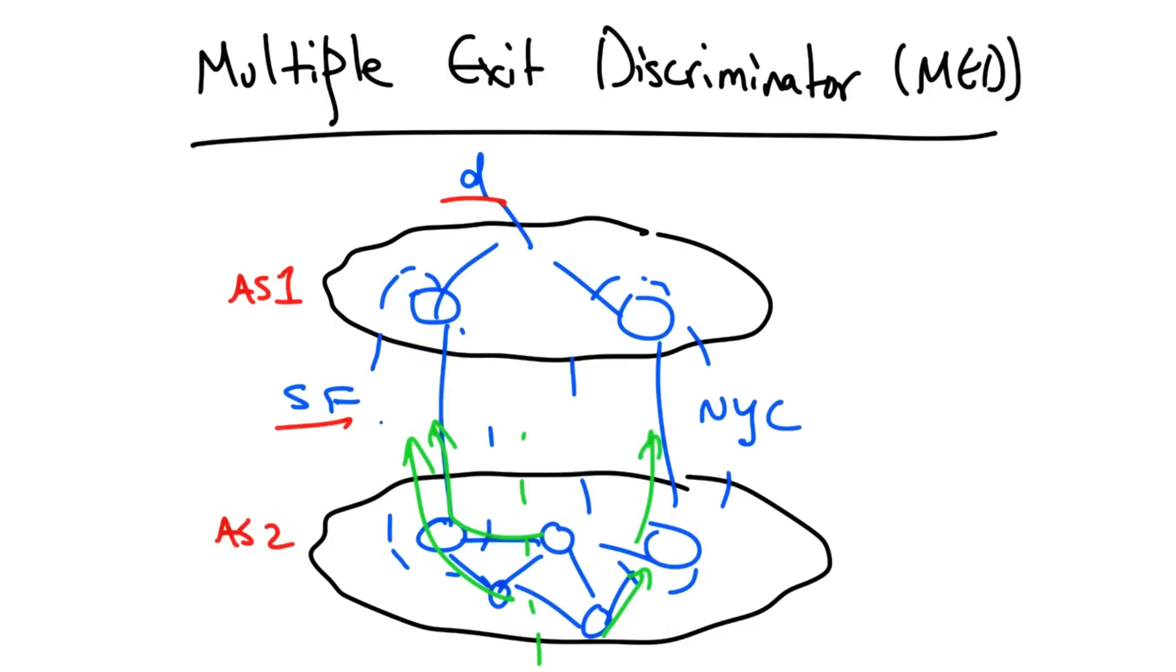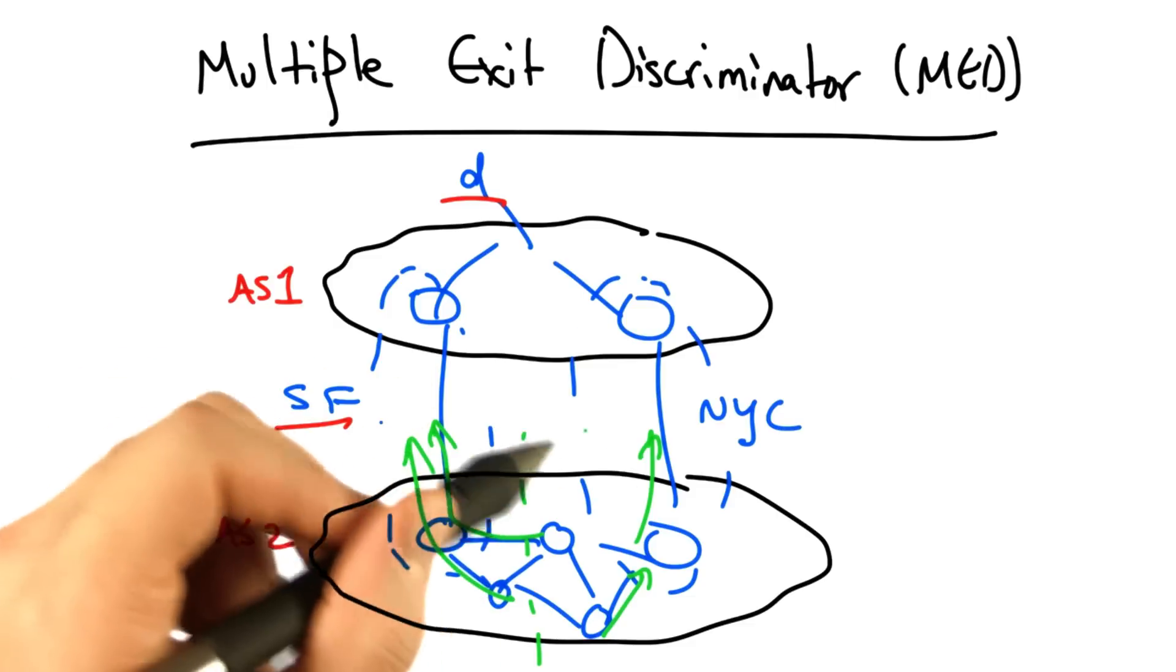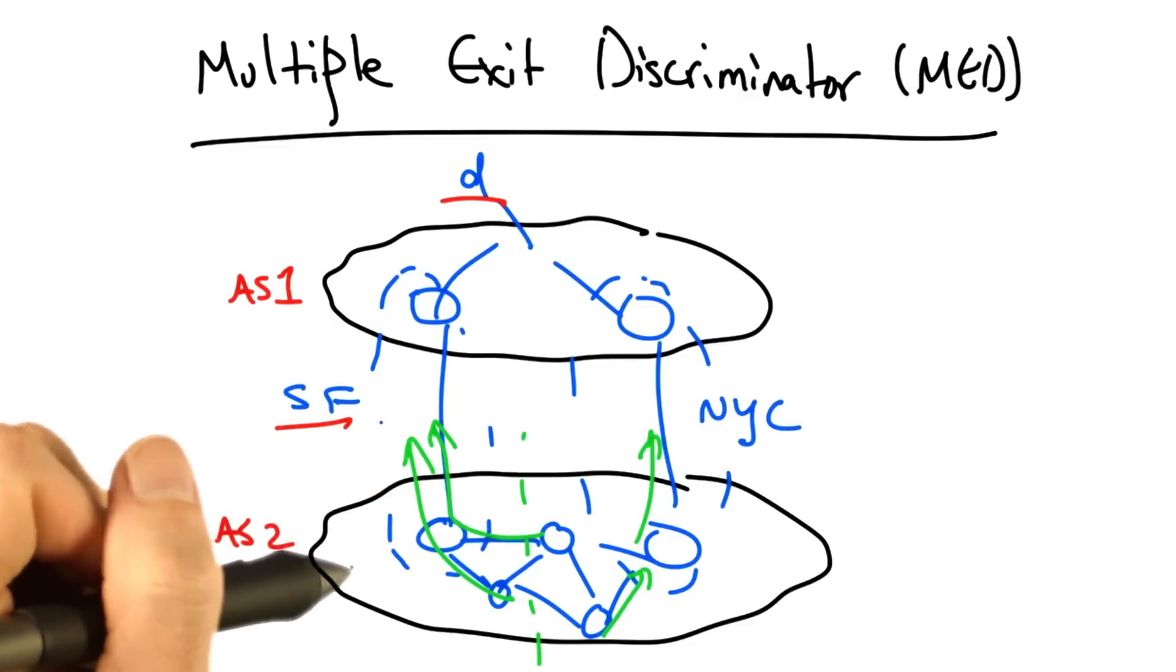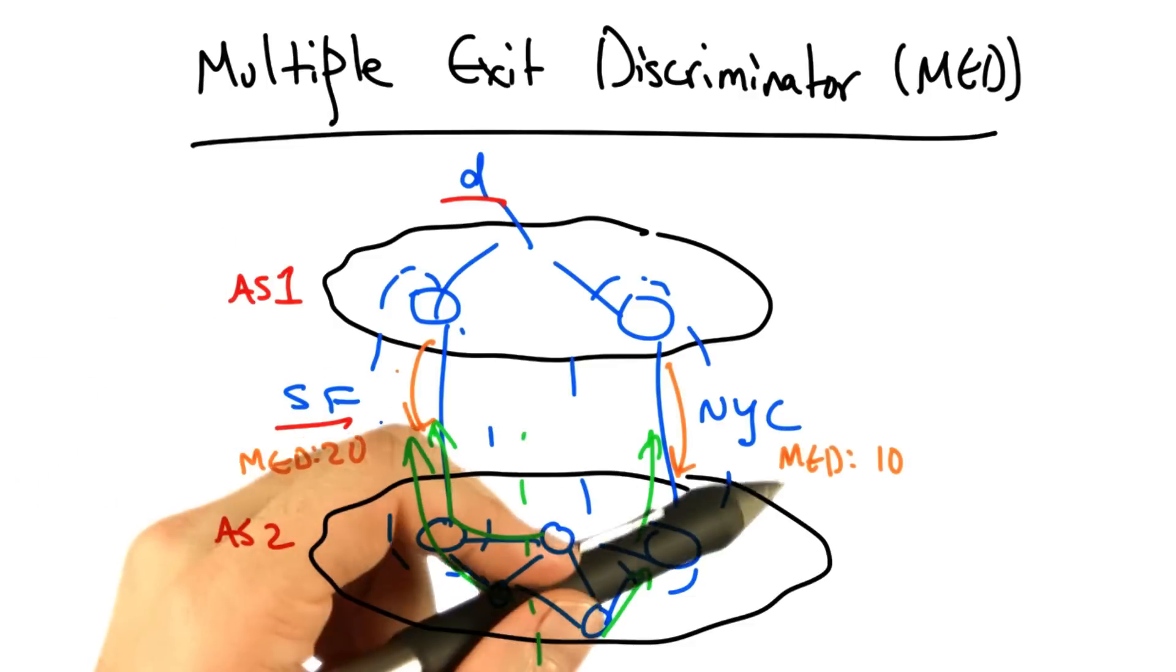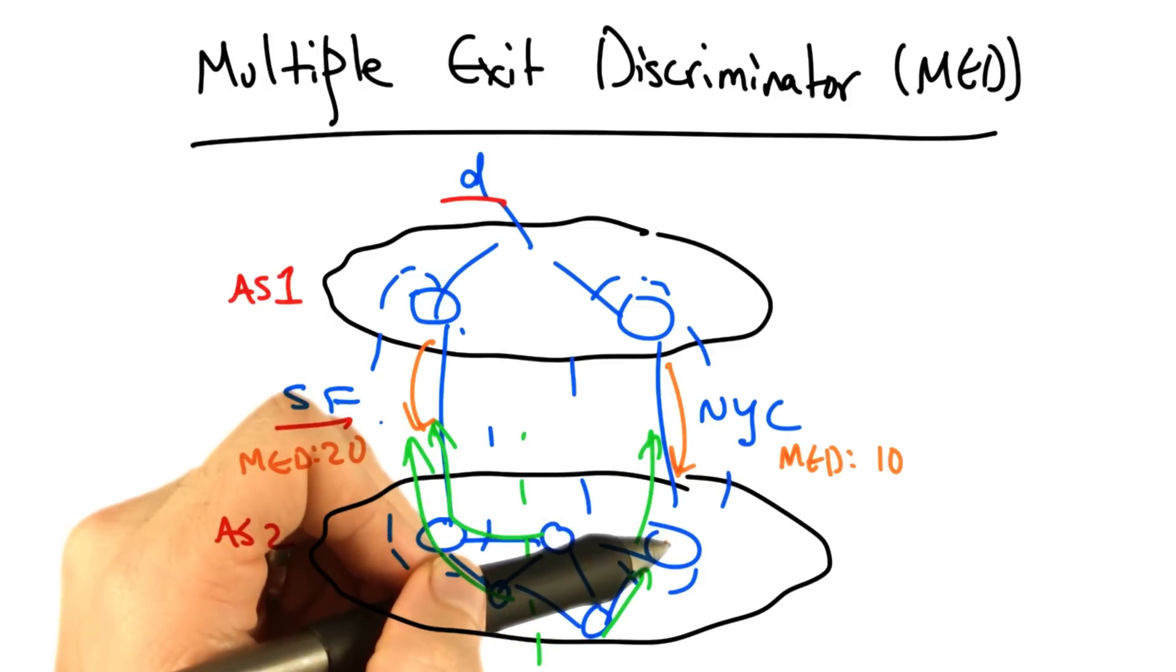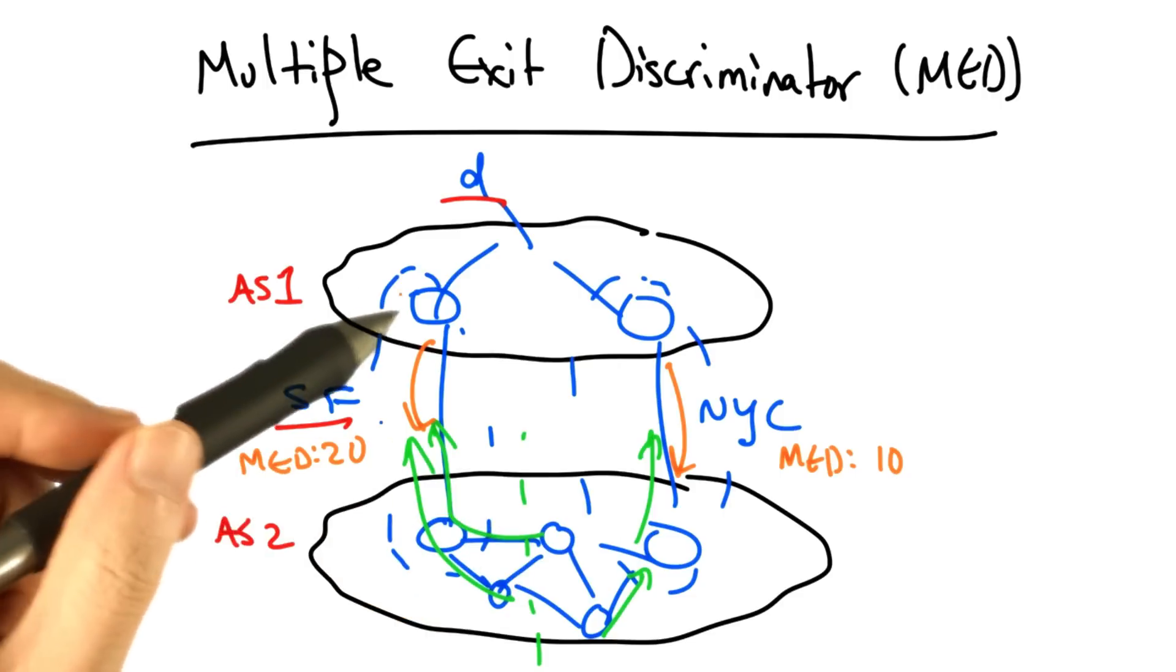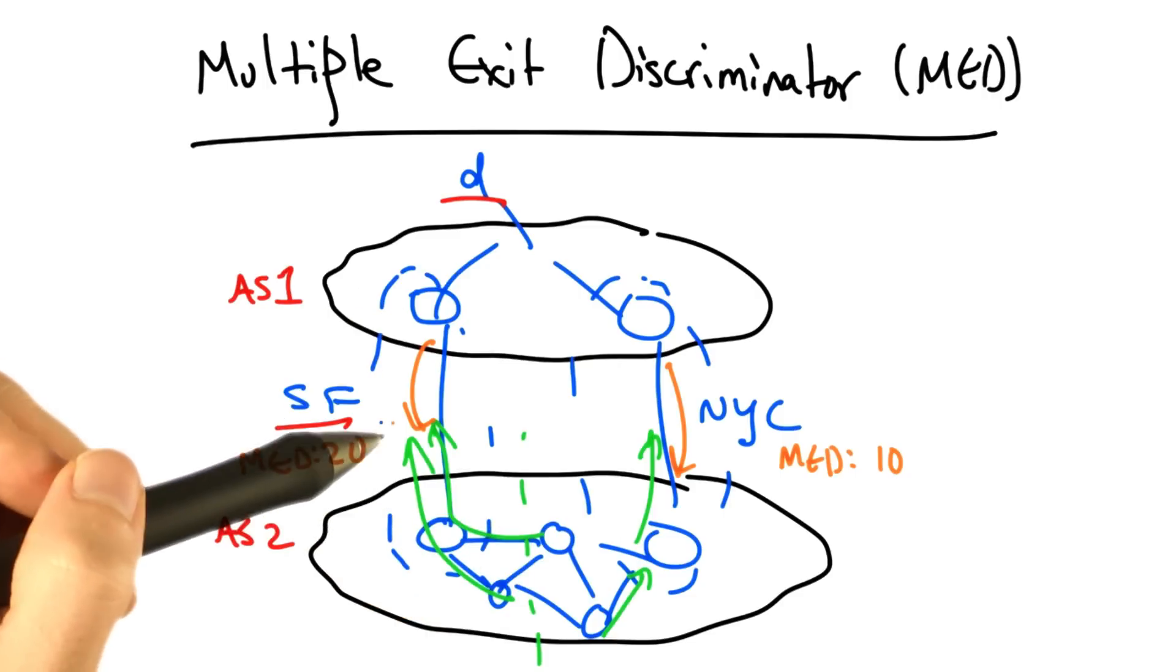To override this default hot potato routing behavior, AS1 might advertise its BGP routes to AS2 with MED values. For example, if the MED value on the route learned at the border router in New York was 10, and the MED value for the route learned from the router in San Francisco was 20,